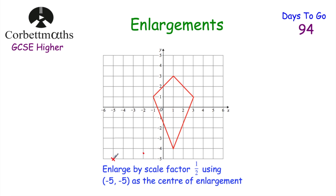For the left-hand point: from the centre it's 4 across and 6 up, so halving gives 2 across and 3 up. For the right-hand point: it's 8 across and 6 up, so halving gives 4 across and 3 up. For the top of the kite: it's 6 across and 8 up, so halving gives 3 across and 4 up. Joining those points up completes the enlargement of the kite using scale factor one half with centre (-5, -5).